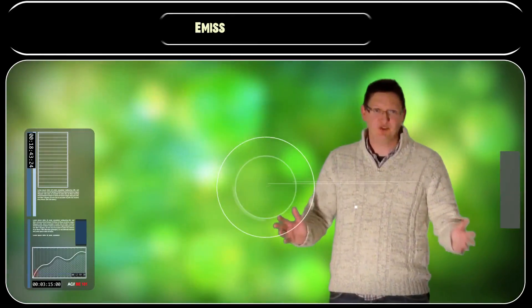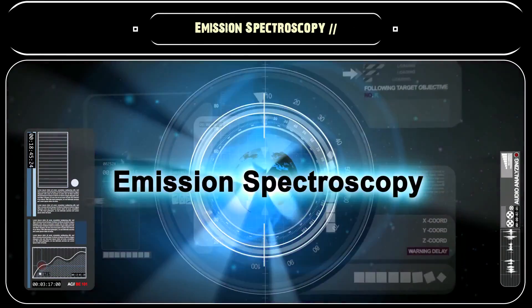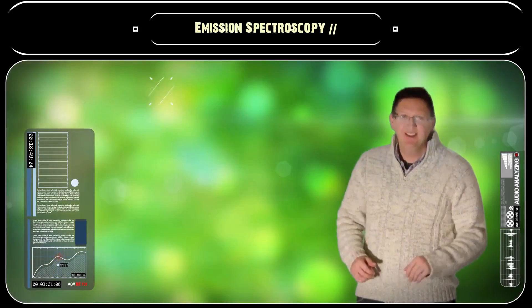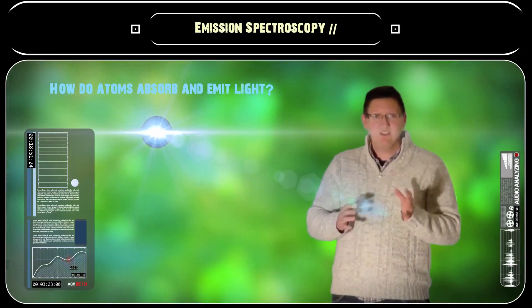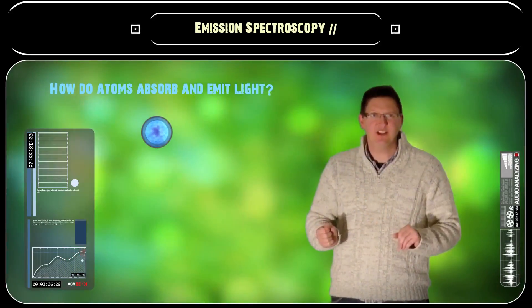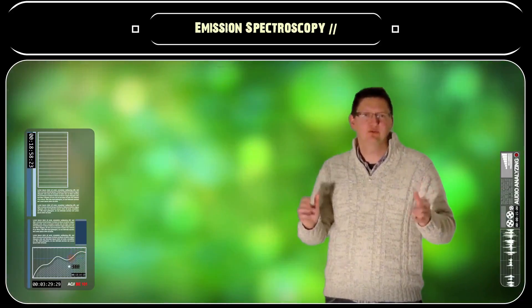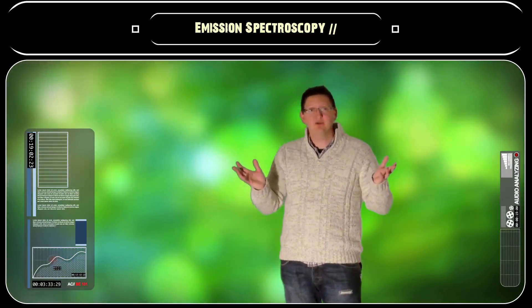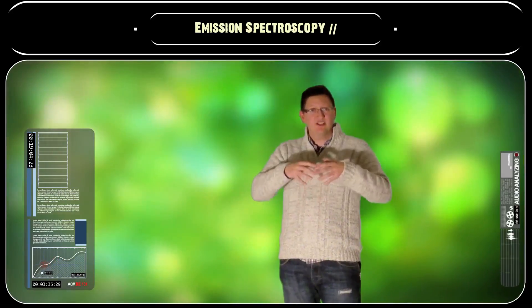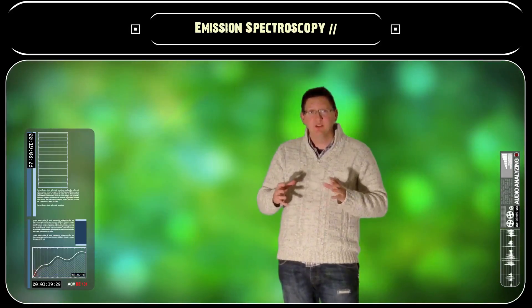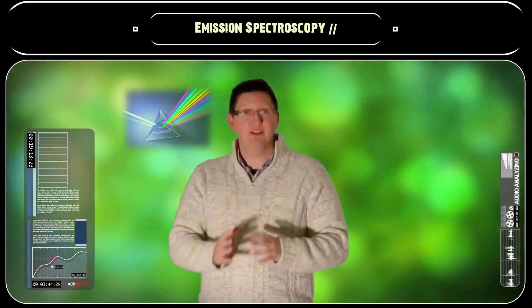Hi and welcome to this tutorial on spectroscopy. In this tutorial we are going to have a look at how atoms and molecules interact with light to give us all the colours that we see around us. The white light that we see comes from the sun and it's just really the visible part of the electromagnetic spectrum. It's actually made up of many different colours, as you can see in a rainbow.